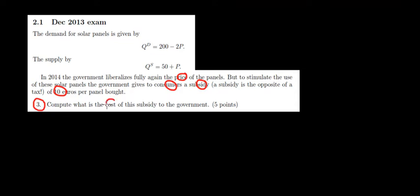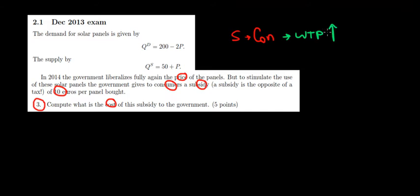Now, what is the cost of the subsidy to the government? First, let's understand the intuition: what does it mean to give a subsidy to consumers? It means that consumers can buy more because they have more money, meaning that the willingness to pay is increasing — they are willing to pay more because they have more money. The willingness to pay shows us the demand of the consumers.